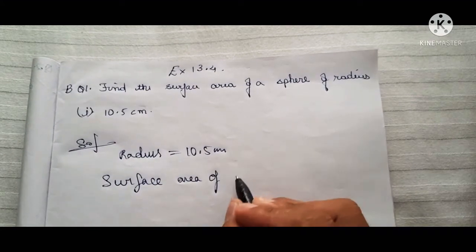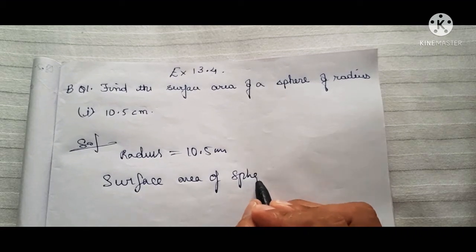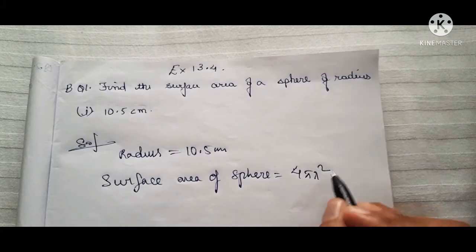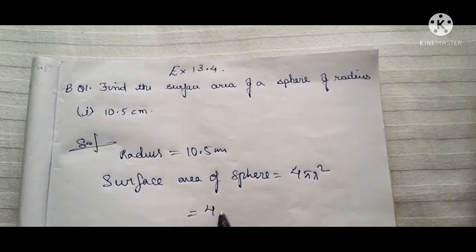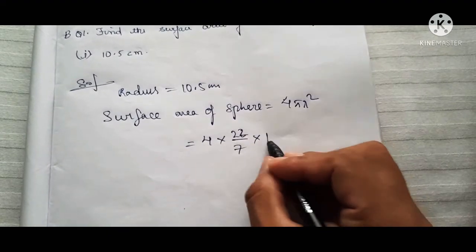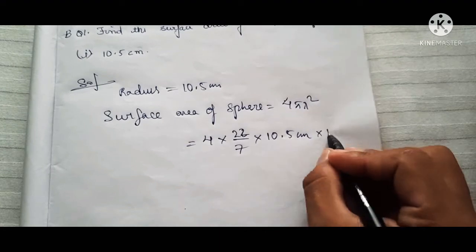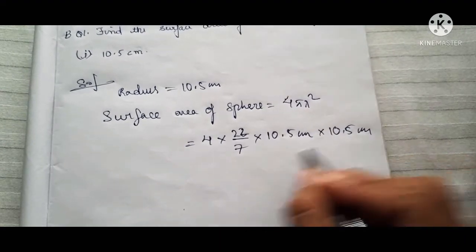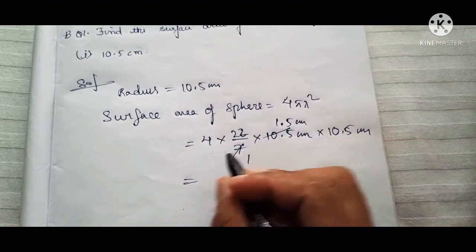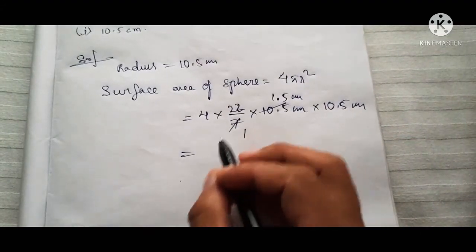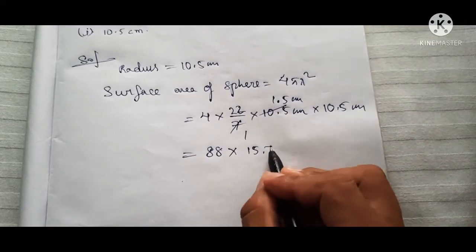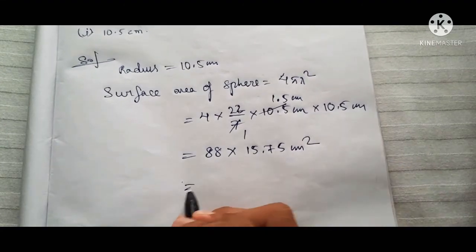The surface area of a sphere formula is 4πR². So π is 22/7, and the radius is 10.5 centimeters. So 4 into 22 will be 88, and 10.5 into 10.5 will be 110.25 — giving us 88 into 110.25. Wait, let me redo: 4 × (22/7) × 10.5 × 10.5. So 4 into 22 is 88, and 10.5 into 10.5 is 110.25, giving 15.75 after dividing by 7. So 88 into 15.75 centimeters squared.